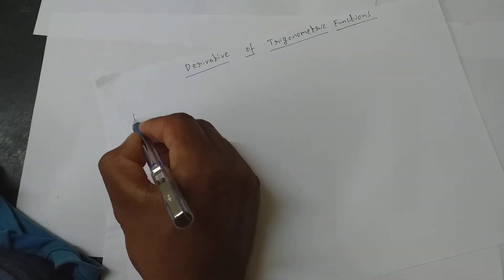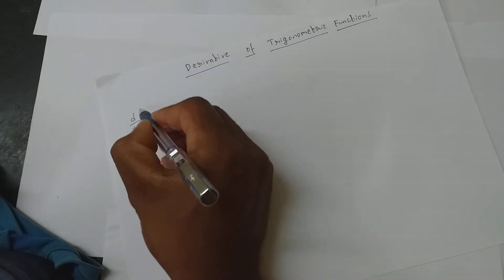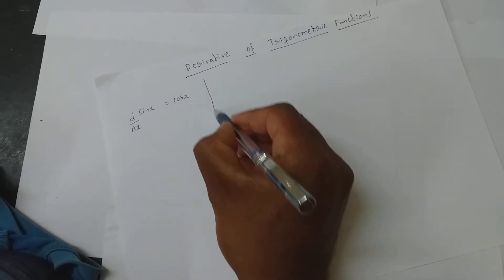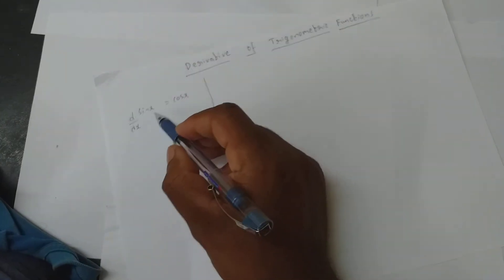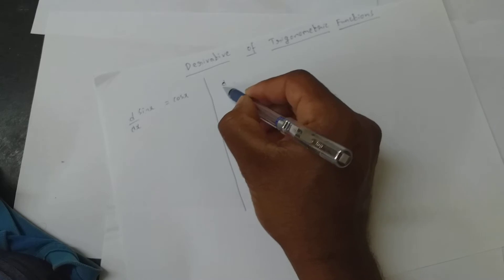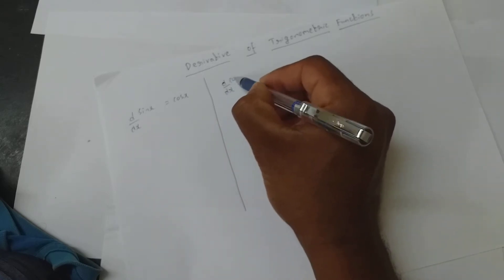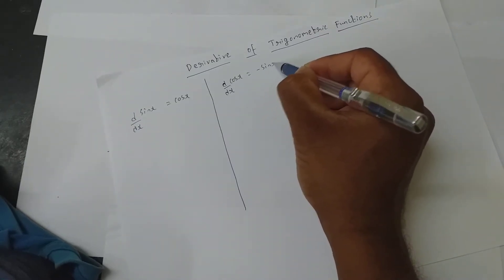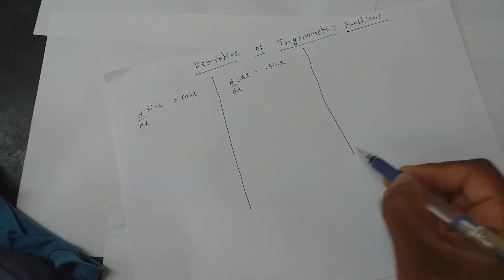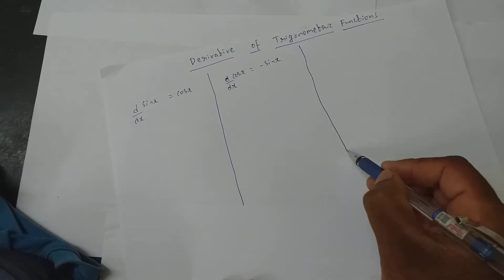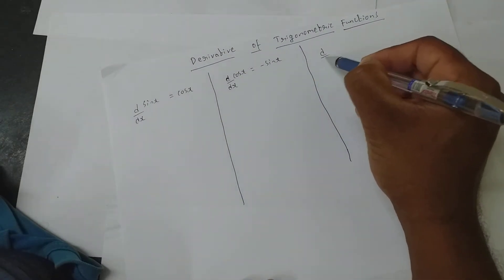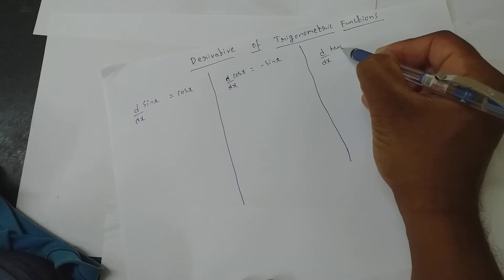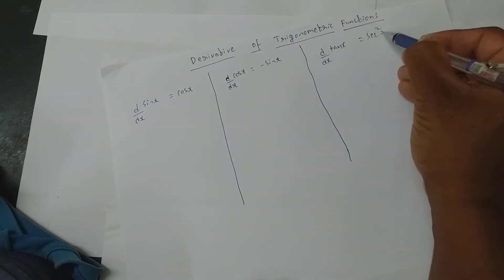So d/dx of sine x is cos x — remember it as a formula. Derivative of sine x is cos x. And d/dx of cos x is minus sine x — that's the rule; you get a negative. And d/dx of tan x is secant square x.